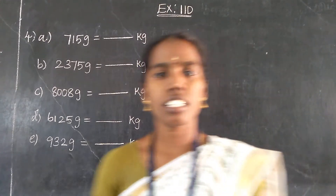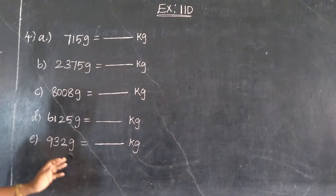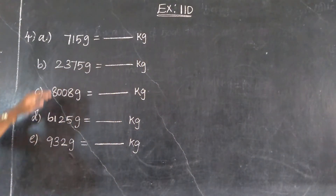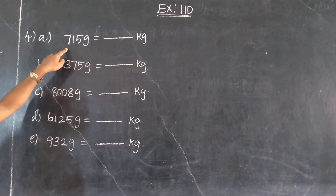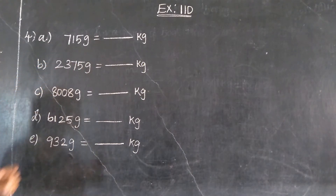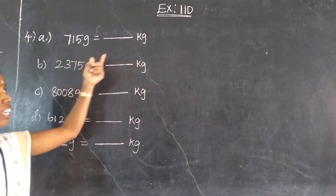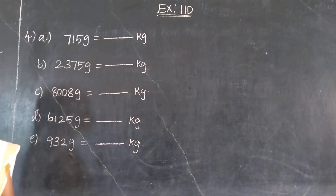Welcome students. This is exercise 11th degree, 4th Roman problem. The first one is 750 grams. So in this, the gram values you transfer to kilogram.